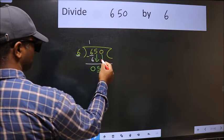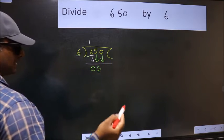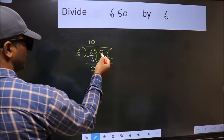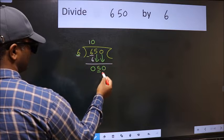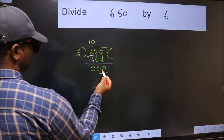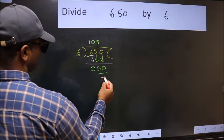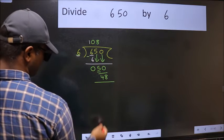The rule to bring down the second number is we should put 0 here, then only we can bring this number down. Now 50—a number close to 50 in 6 table is 6 times 8, 48. Now we should subtract.